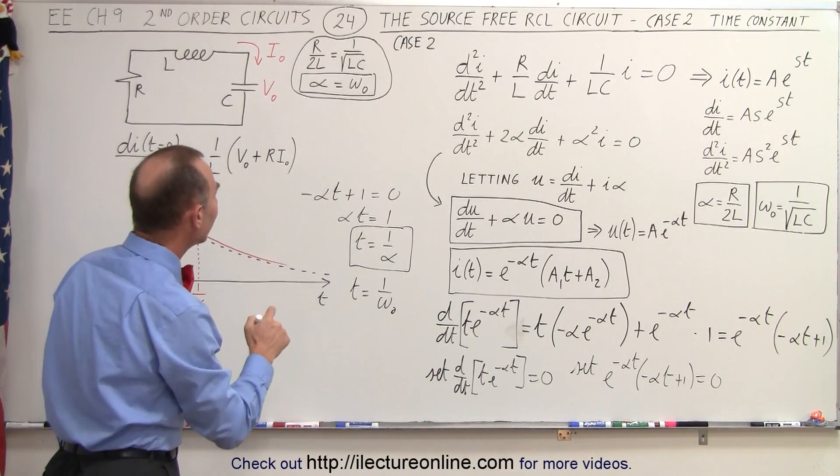Now remember that alpha was equal to omega. So we can say that the time is equal to 1 over omega. Of course that can only happen in the special case, case 2, where we have critical damping. And then we realize that omega is equal to 1 over the square root of LC.